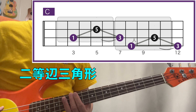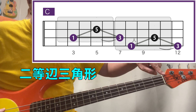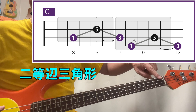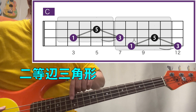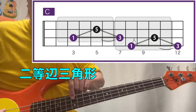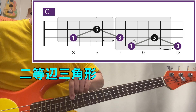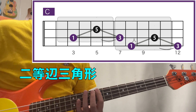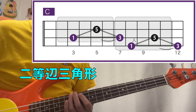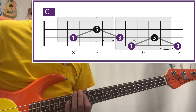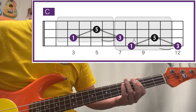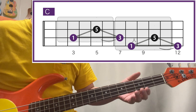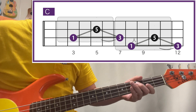こっちからスタートでドミソっていう、これもあるよね。4弦の12フレットと同じ音で、4弦の開放ノートの1オクターブ高い12フレットにもミがあるから、1度3度5度のドミソがありますと。